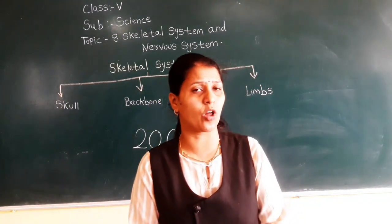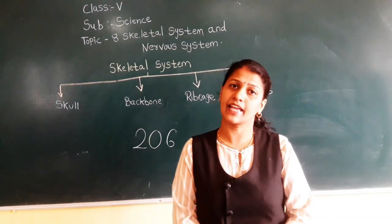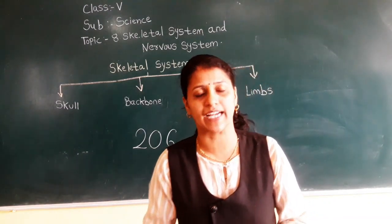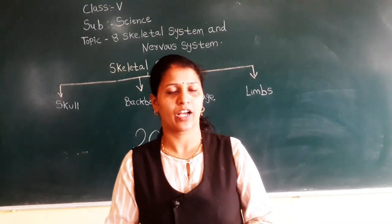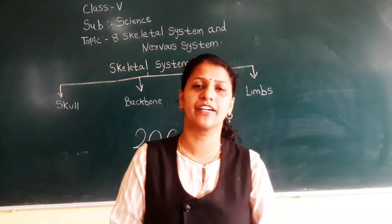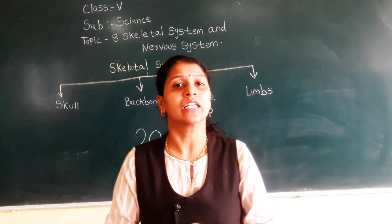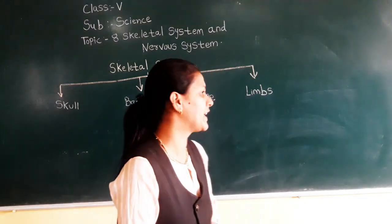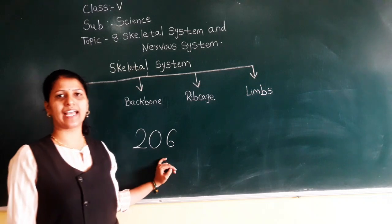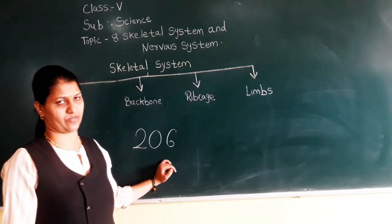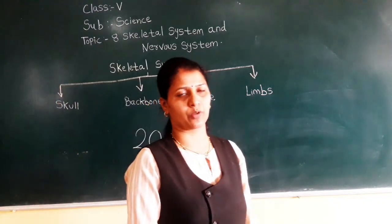Have you seen small babies? Newborn babies have more bones — that is 300 bones. But adult human beings have 206 bones.